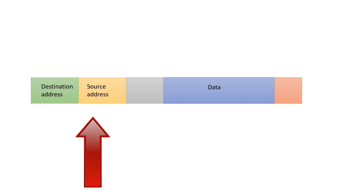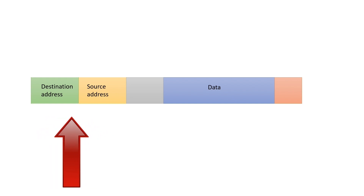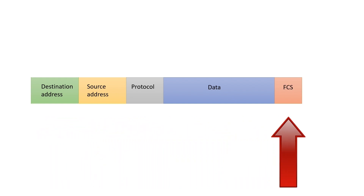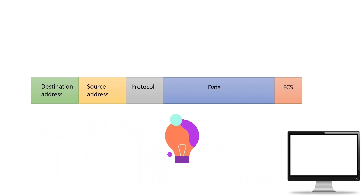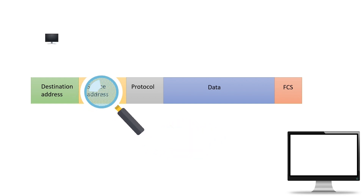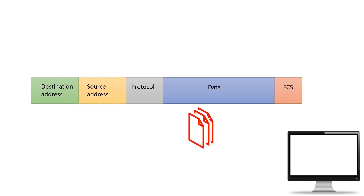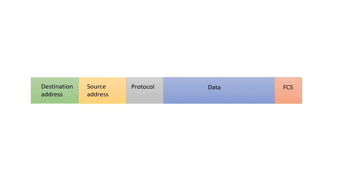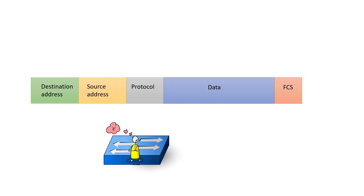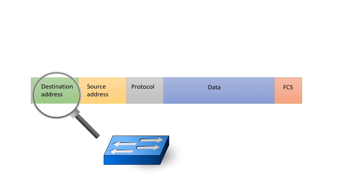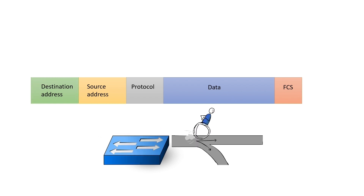After segmentation, the device attaches the necessary information to each data piece. This information includes the source address, destination address, and other protocol-specific information. The destination device uses this information to know about the source device and regenerates the original data stream by assembling all frames. The intermediate devices use this information to make forwarding decisions. A switch is an intermediate device — it uses this information to make a forwarding decision.